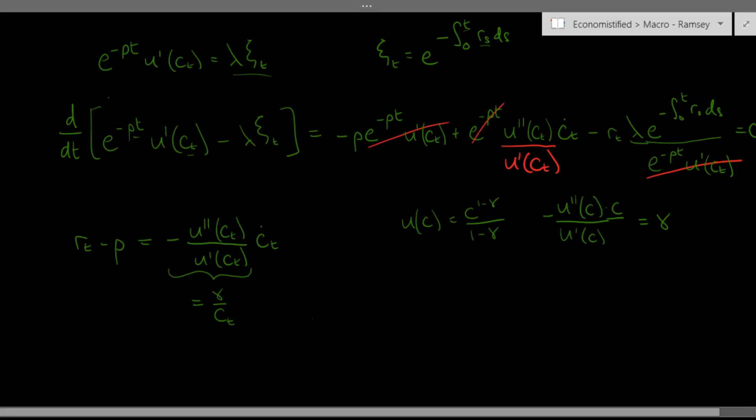So just rearranging that again, we get that ct dot over ct, the growth rate of consumption, is just going to be equal to the difference between the interest rate and the discount rate divided by the coefficient of relative risk aversion, gamma. And this is our Euler equation in continuous time.